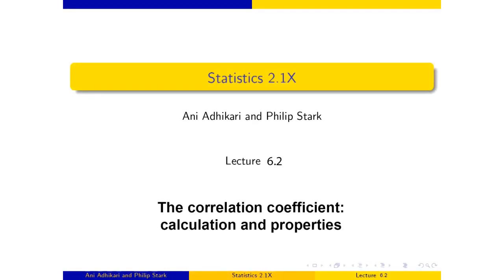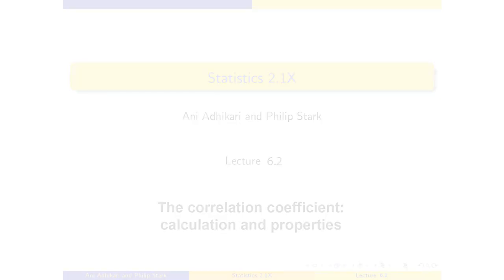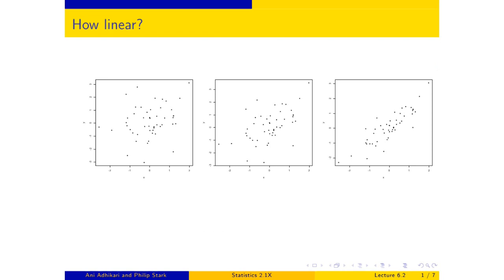We're now going to develop a measure of how tightly clustered a scatter diagram is about a straight line. If you just look at a scatter diagram, it's actually quite hard to say numerically how tightly clustered it is, even if we have some understanding of what that means, because our eye is very much affected by the choice of scale.